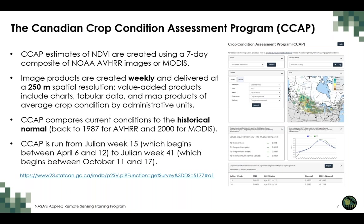CCAP provides map products at the pixel level as well as tabular information and graphs of NDVI through the growing season. CCAP compares current condition to historical normal, with the historical normal dating back to 1987 for AVHRR and 2000 for MODIS. In Canada, CCAP runs from Julian week 15 — approximately the start of the Canadian growing season — to Julian week 41.